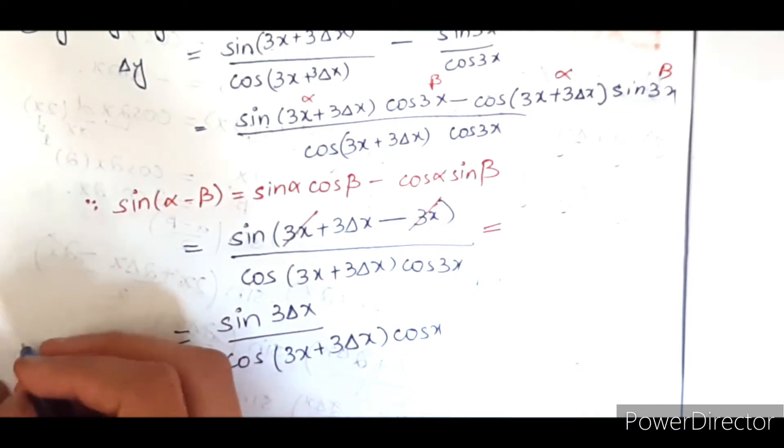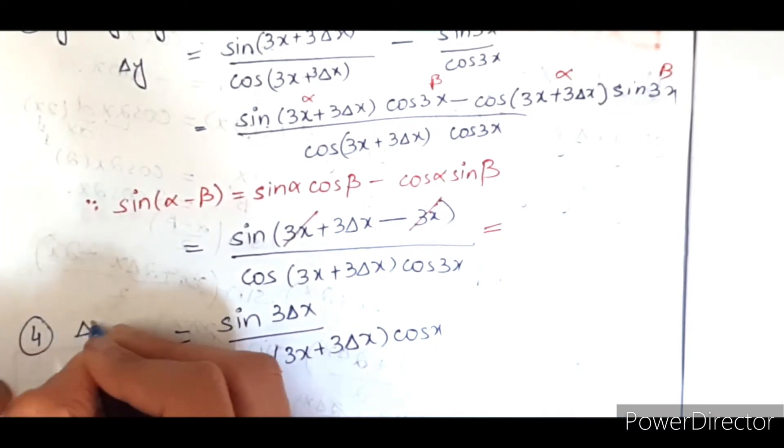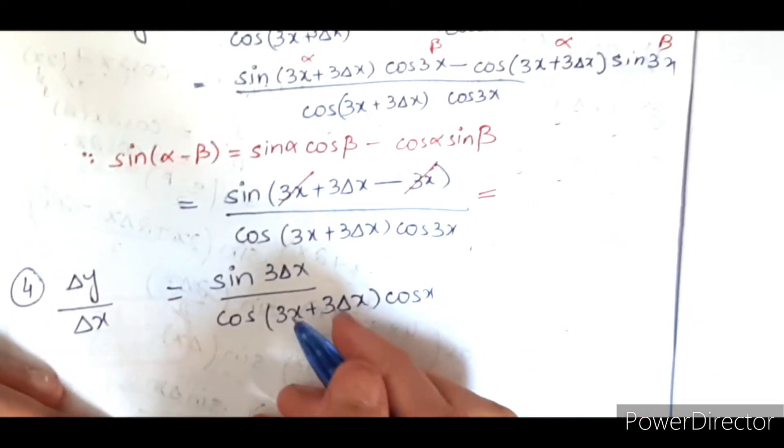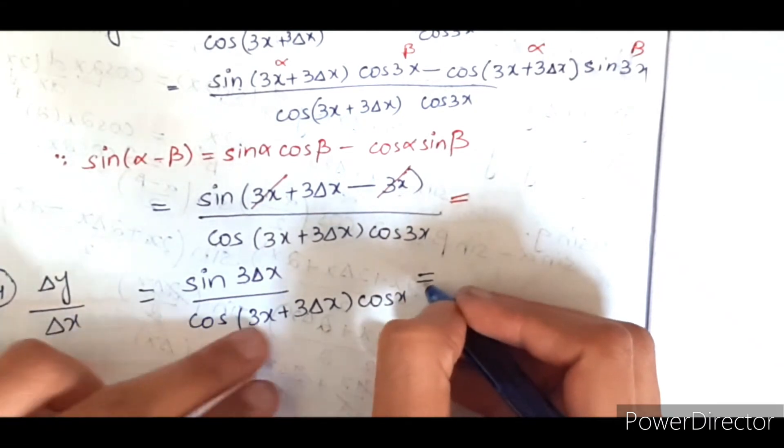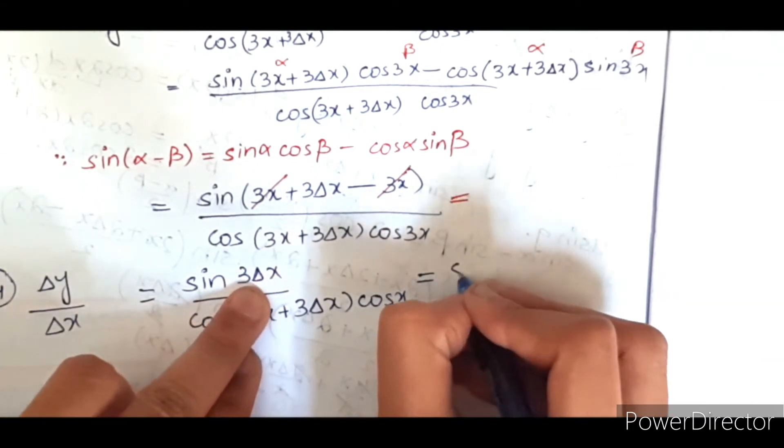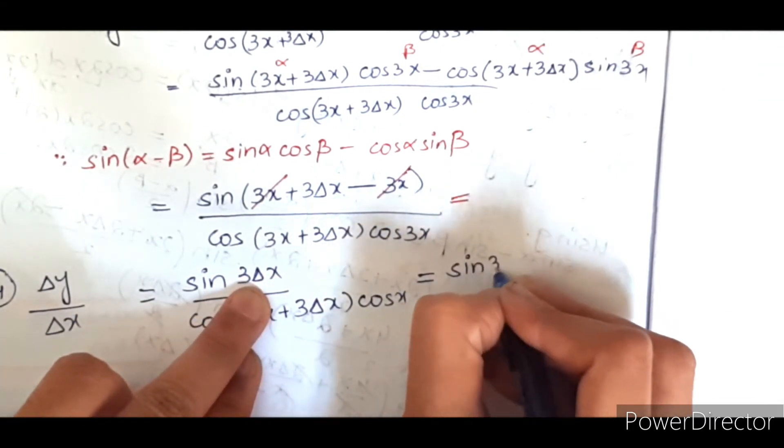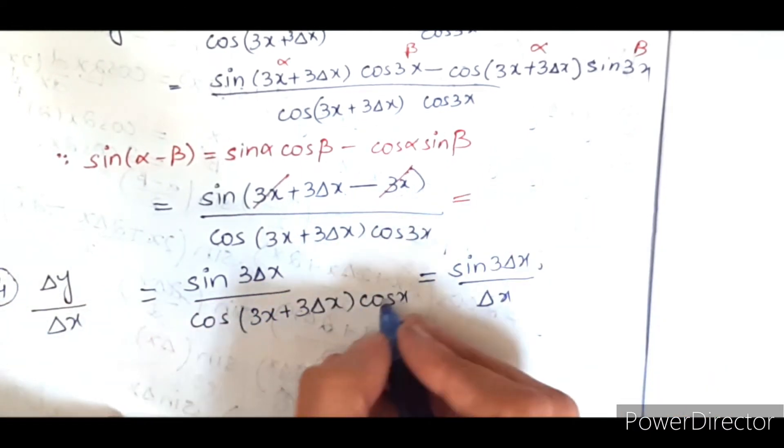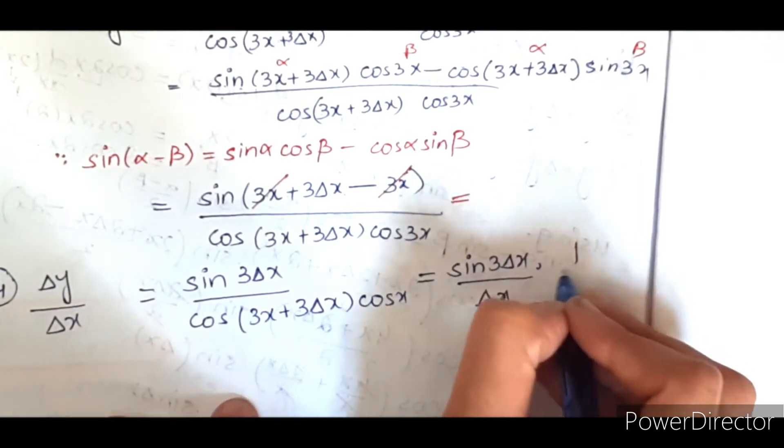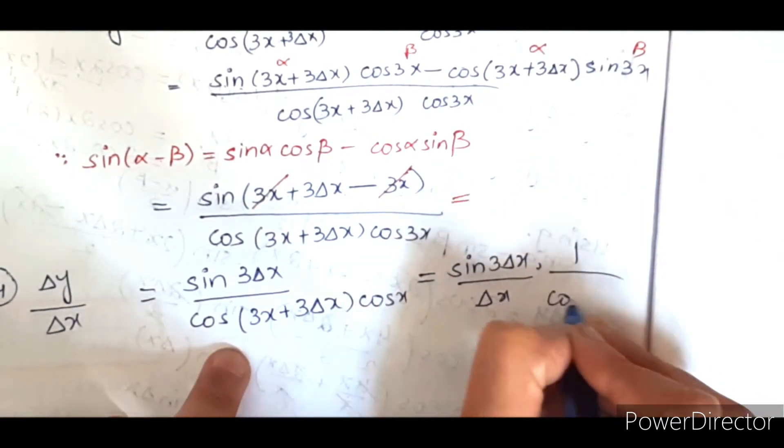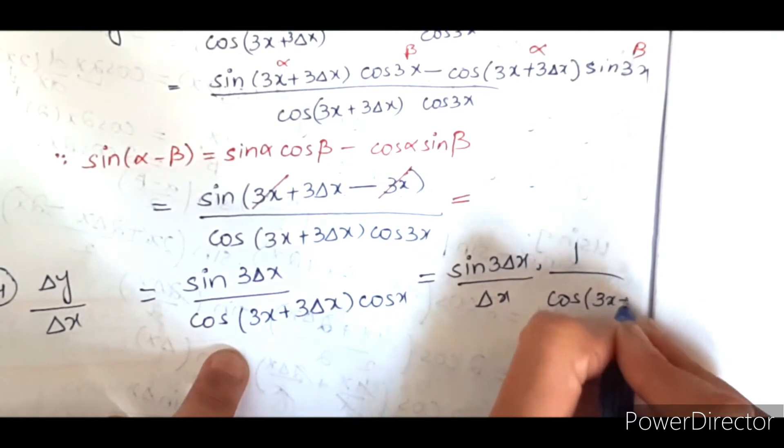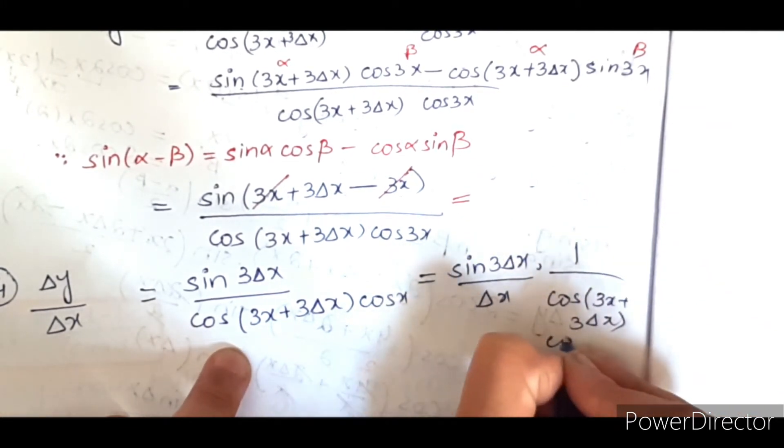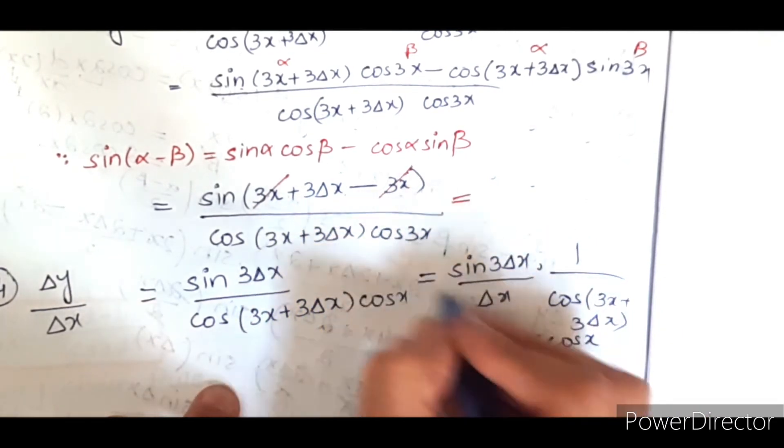Now the fourth step is to divide it by del x. So we are dividing sin 3 del x by del x, and the remaining stays the same. This means we separate the whole denominator: cos 3x plus 3 del x into cos 3x.